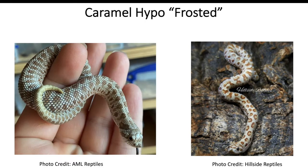Our next combination of the caramel gene with another recessive gene is the caramel hypo, also known as the frosted. This is going to be a very important combination for the rest of the morph combinations in this slideshow. Remember: whenever I use the term 'frosted' I'm referring to a visual caramel hypo, and when I talk about 'hypo' I'm referring to the Evans hypo or the Dutch hypo.